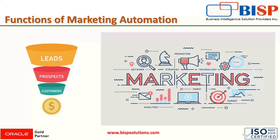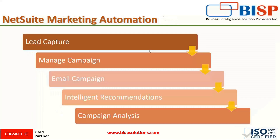Then they move towards the designing of the campaign. And at last, after designing the marketing campaign, they analyze and track the results — finding out what's not working and adjusting as needed to achieve the greater return on their marketing investment. So this is the basic functionality of marketing automation.